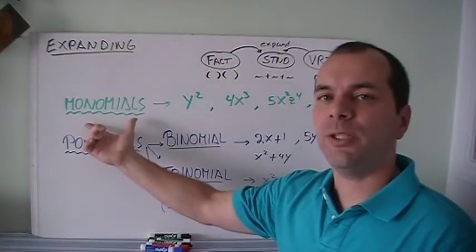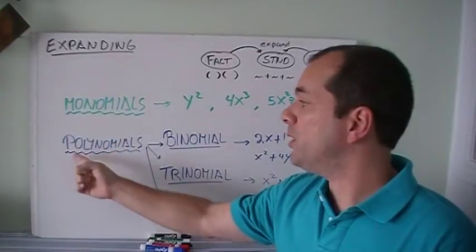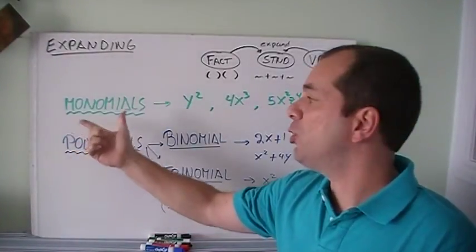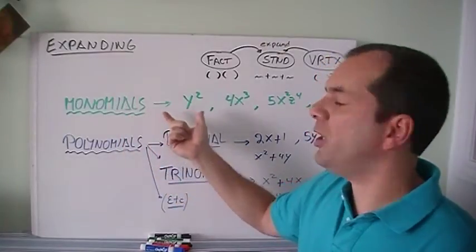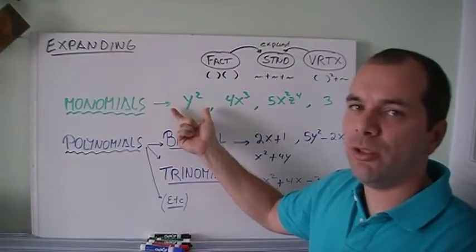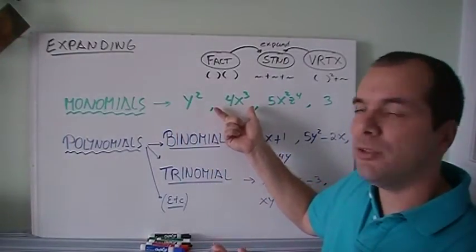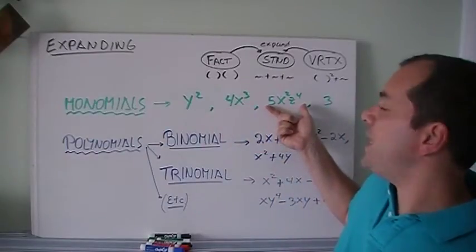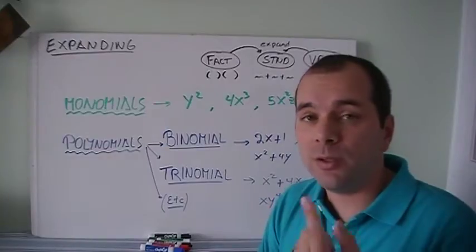Before we get into things, let's talk about monomials. Mono means one. So a monomial means it's one term. What is a term? Well, if you can recognize it, y squared is one term. There's nothing adding or subtracting, just multiplication among themselves. 4x to the power of 3, nothing adding or subtracting. 5x squared z to the power of 4, or even just the number 3 are all monomials, because there's only one term.